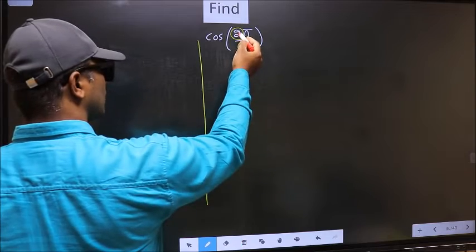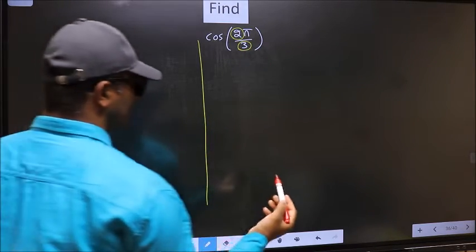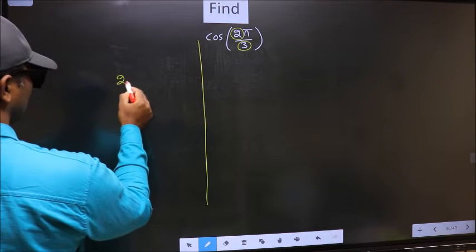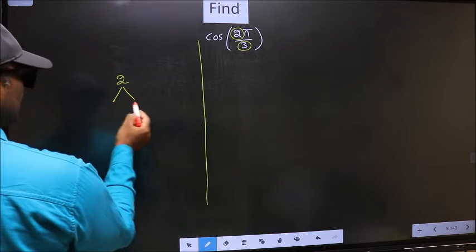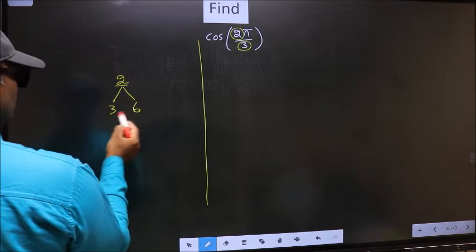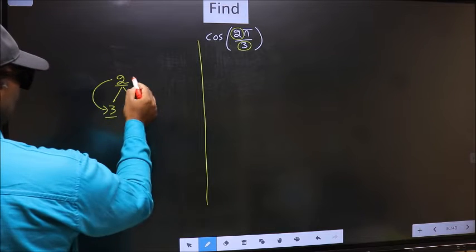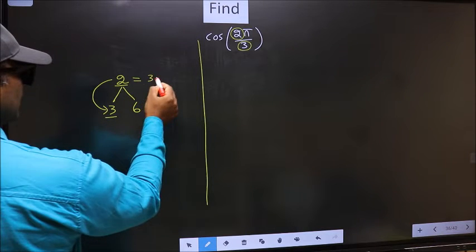Now you should check 2 is close to which multiple of 3. What I mean is 2, and here you write multiples of 3, that is 3 and 6. Now 2 is close to which number? 2 is close to 3. So now 2 should be written as 3 minus 1.